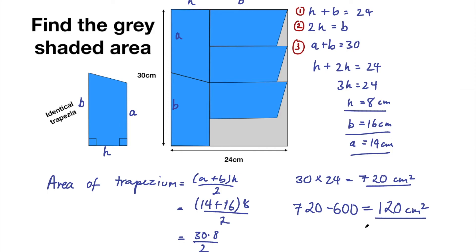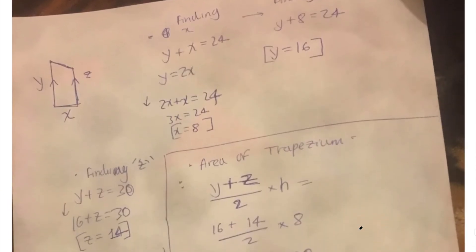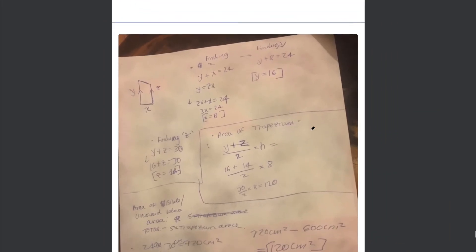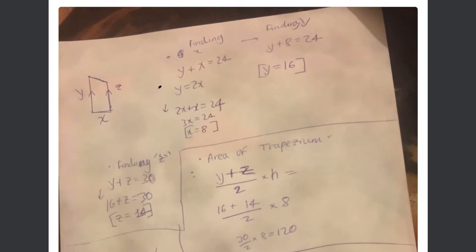And Rexan also sent in his solution. So we're going to have a look at that and do a bit of a critique see how he went. So here is his solution down here. You can see he started by writing down those equations. So he's labeled them x y and z instead of a b and h. That's absolutely fine. You can label them whatever you want.